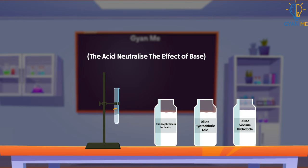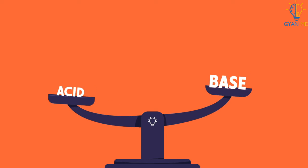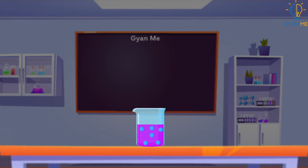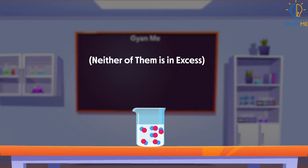This is because the acid neutralizes the effect of base. The point at which acid and base neutralize each other is known as the equivalence point of the reaction. In other words, the equivalence point of a reaction is the point when both the acid and base in the reaction have been completely neutralized and neither of them is in excess.